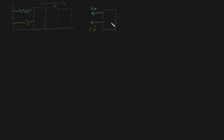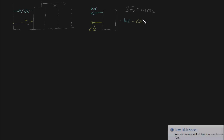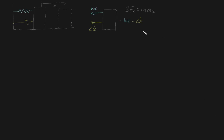Are there any other forces? Well yes, you've got gravity and normal force, but I won't bother drawing them because they're not too important. We can use Newton's law: the sum of forces in the x direction equals mass times acceleration in the x direction. The sum of forces is minus kx (negative because it acts towards the left, with right defined as positive) and minus cx-dot. This equals mass times acceleration, which is the second derivative of displacement.